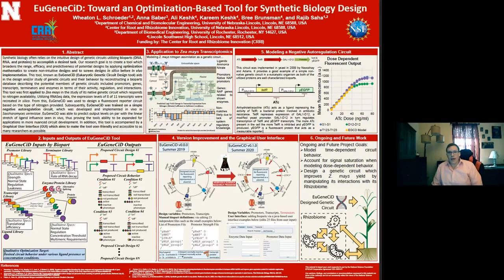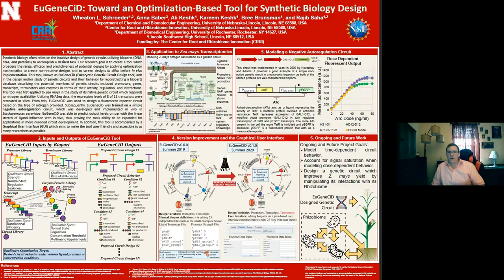The first application of EugeneSid that we tried was to maize's nitrogen assimilation pathway. We used all the native promoters, transcripts, genes, and terminators of that pathway, hard-coded the EugeneSid solution using that biopart library, and then tried to see if EugeneSid would accurately replicate the circuit behavior. We used transcriptomic data that we got from a collaborator in the Center for Root and Rhizobiome Innovation.